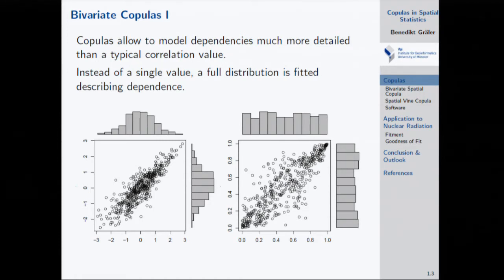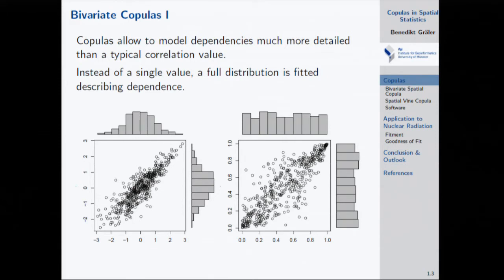Kriging is really tied to a single possible family, but there are many more families out there — those implemented in the copula package I showed. Any distribution function on the unit square can be a copula, so any density that integrates to one on the unit square can be used for modeling.